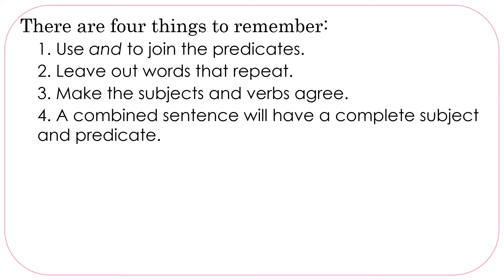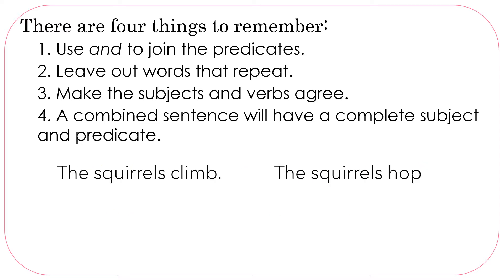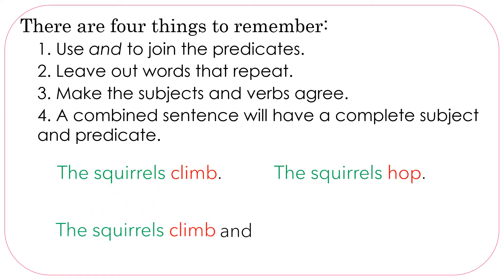We'll look at another example. The squirrels climb. The squirrels hop. We have 'the squirrels' in both sentences and then different verbs: climb and hop. So we can take 'the squirrels climb,' use the conjunction AND, and add 'hop.' The squirrels climb and hop.